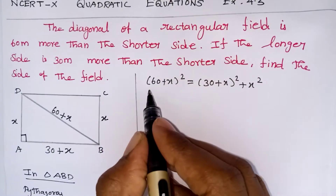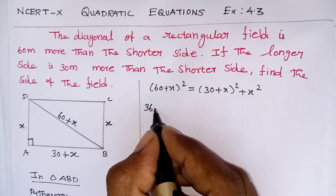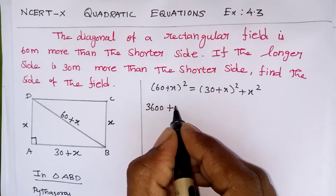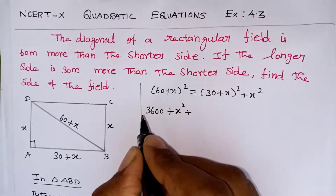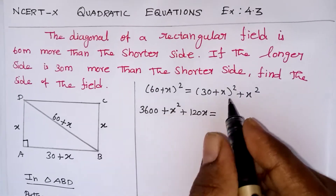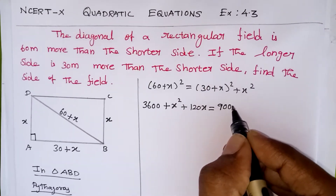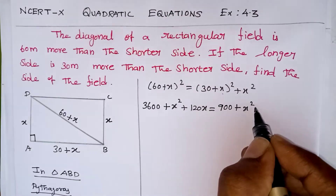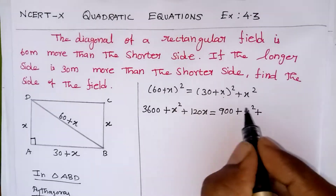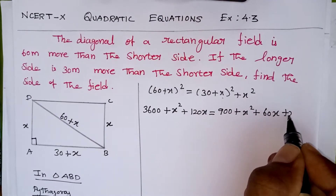Now we expand using the (a + b)² formula. So: 60² + x² + 2 × 60 × x = 30² + x² + 2 × 30 × x + x². That gives us: 3600 + x² + 120x = 900 + x² + 60x + x².